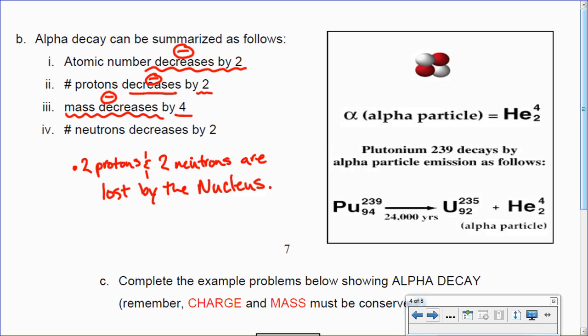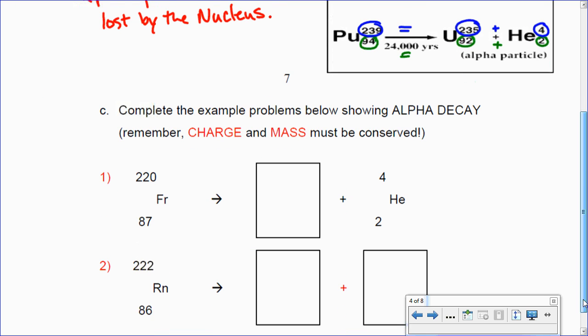So plutonium 239 decays by alpha particle emission as follows. This is kind of what we were seeing, not with the same element, but in that previous little animation. So the 239 has got to equal the 235 plus the 4. So that's how we know that the mass is conserved for the atomic mass. Number of protons, 94 has got to equal 92 plus 2. These numbers. And it does. And that's a good thing. Now, 24,000 years in this particular example means that it takes 24,000 years roughly for plutonium to turn into uranium. Which means that plutonium is very radioactive for a very long time. Which can be a problem for us human beings if we wanted to use this stuff.